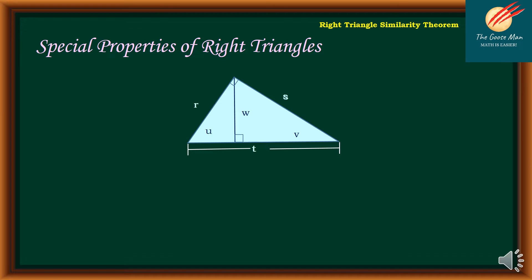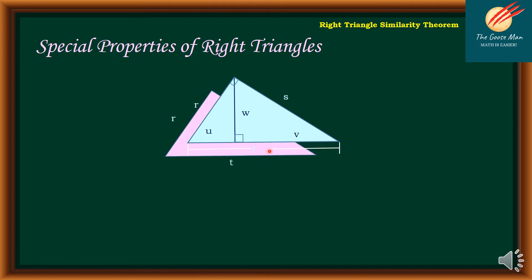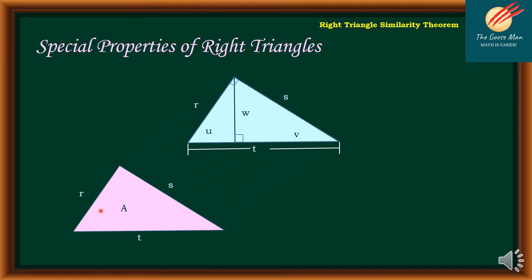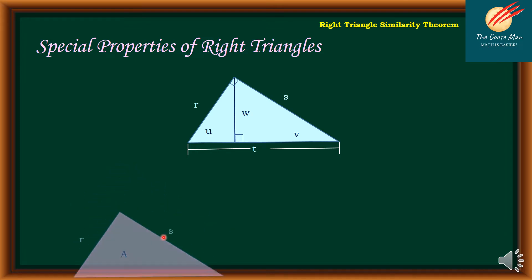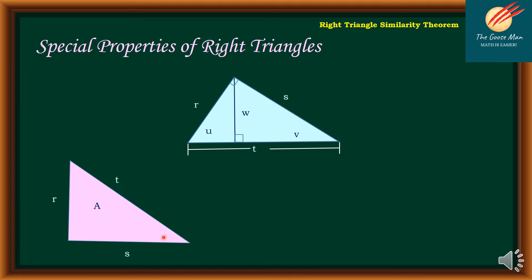To understand more of the special properties of right triangles, let us look at the triangle here. We have the sides R, S, and T. This is area A with sides R, S, and T. I'll orient this so it will look like this. Then I'll chop the original triangle into two smaller parts.